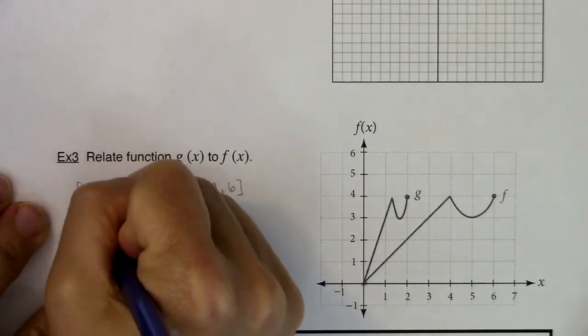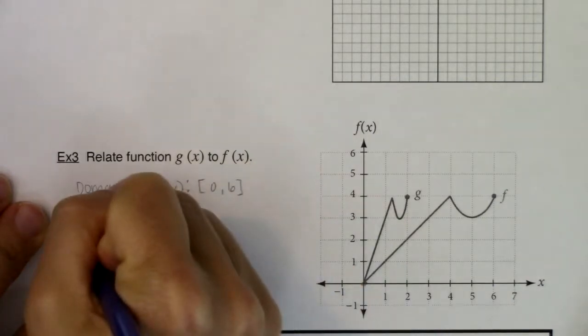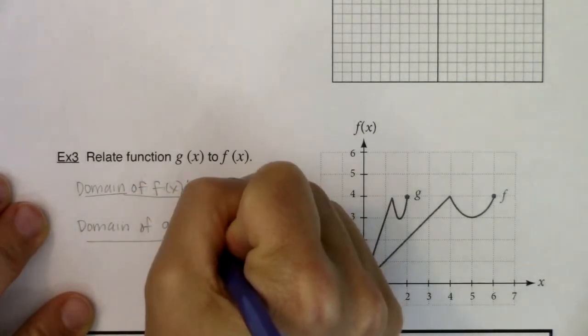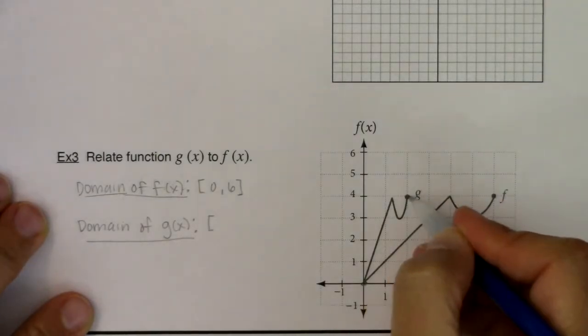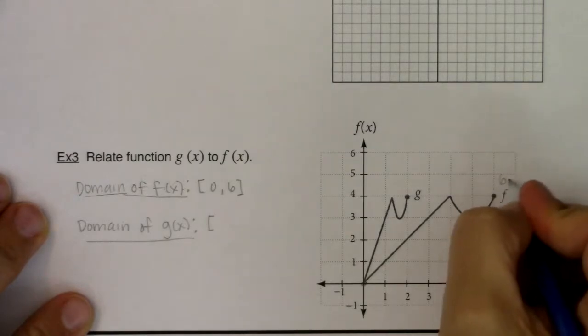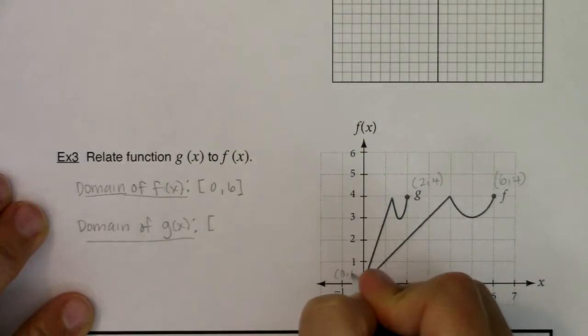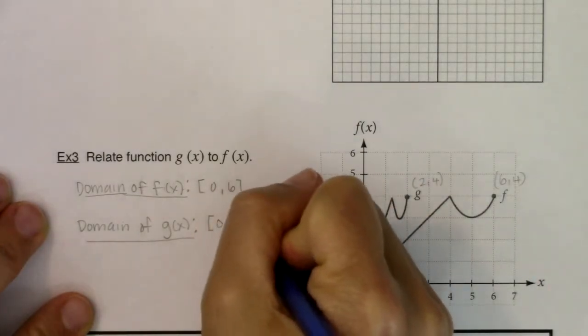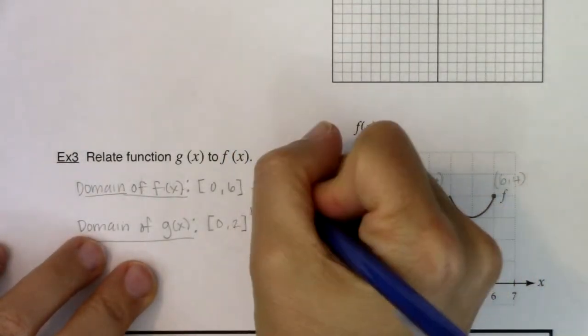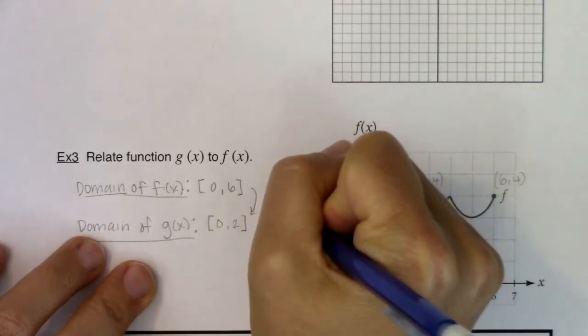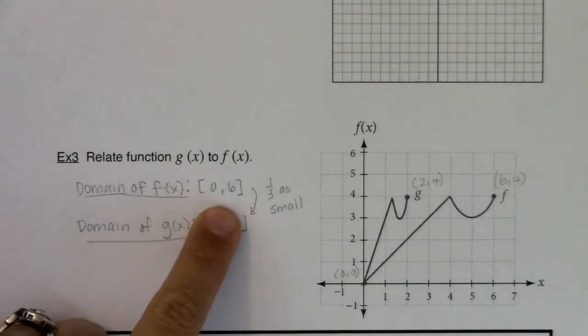On the flip of that, let's take a look at the domain of g. So g goes from (0, 0), and then it goes to (2, 4). Where this rightmost point was (6, 4), this one is (2, 4). And they both start at (0, 0). But the domain here is 0 to 2.